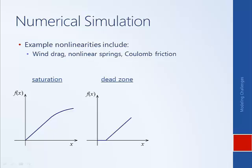Another example type of nonlinearity is called a dead-zone. An example of this in a motor derives from stiction or the Coulomb friction model of friction. You can imagine supplying some voltage to the motor, but the motor doesn't move initially, because the motor needs to generate sufficient torque to overcome this stiction friction before it will break free and start to move.